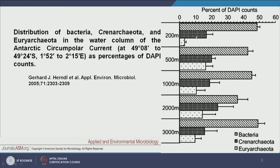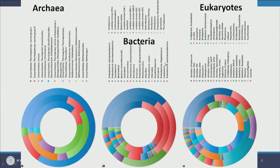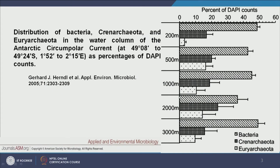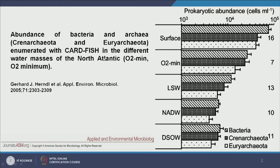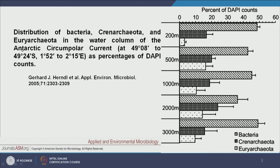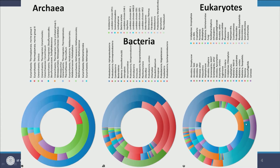At the very surface we have less archaea and more eukarya, but with depth archaea also gain abundance. Basically, with depth and with the kind of ocean — whether the North Atlantic or the Antarctic Circumpolar Current — the microbial population varies from one domain to another. In addition, metagenomic analysis shows that at any given depth the diversity of archaea, bacteria, and eukaryotes also varies. At the phylum level, archaea show less diversity compared to bacteria, and eukaryotes have the highest diversity.